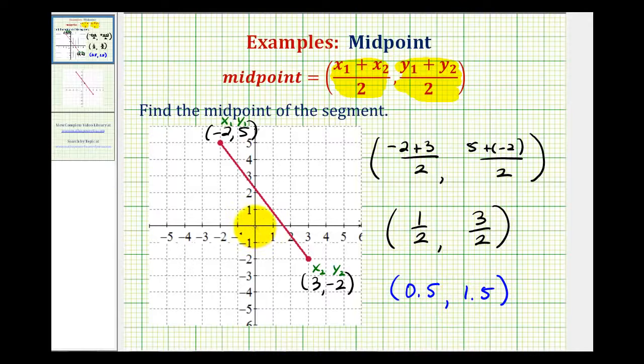So if we wanted to plot this point, we'd move to the right of the origin half a unit and up one and a half units to this point right here. This would be our midpoint.